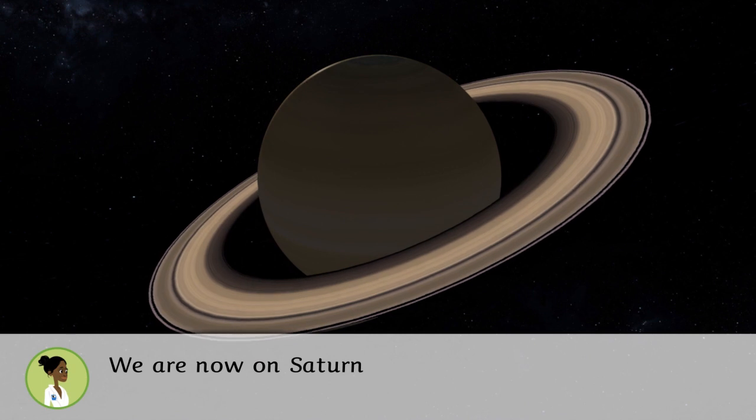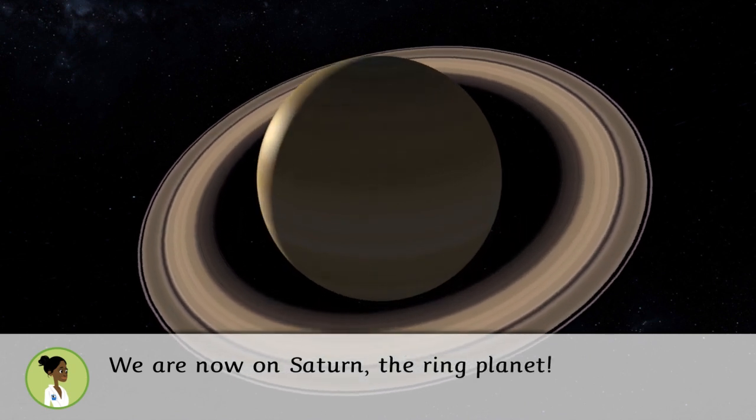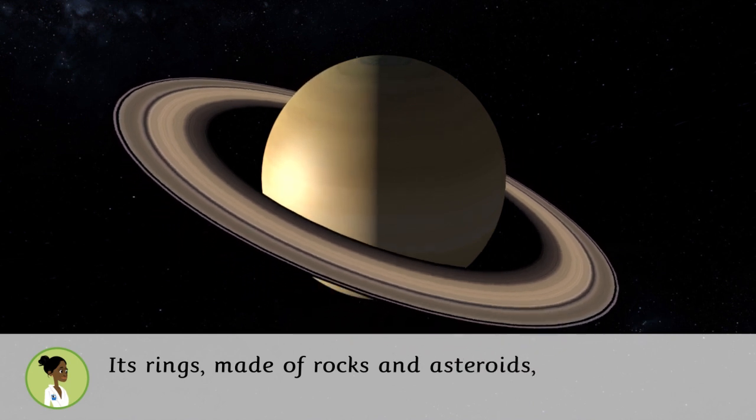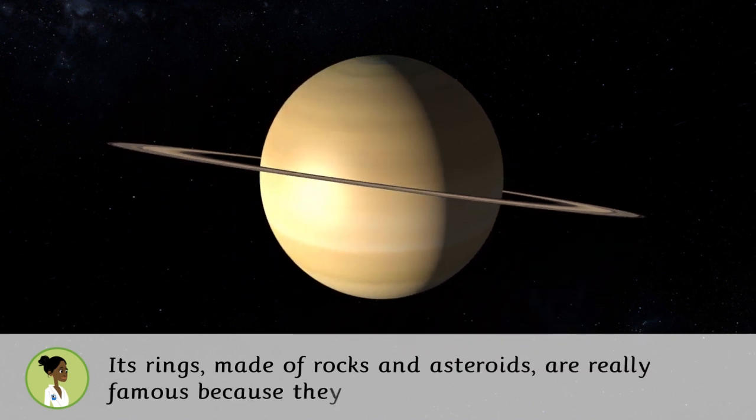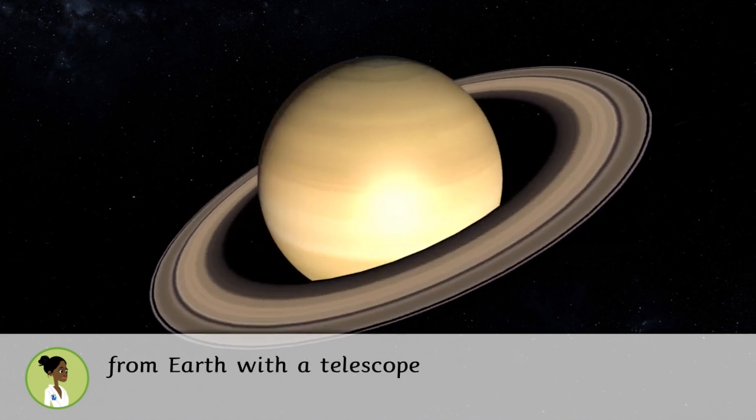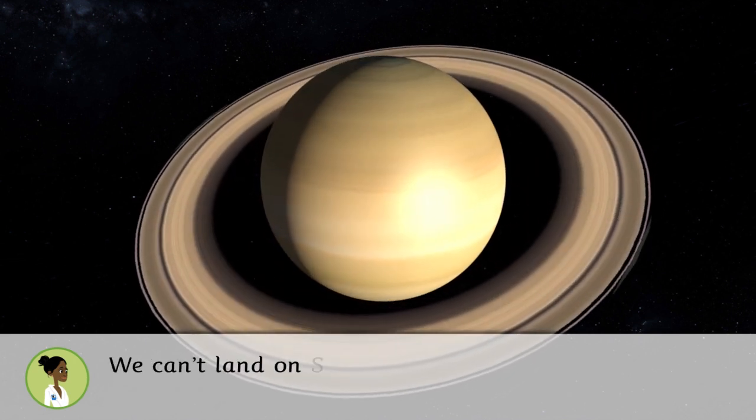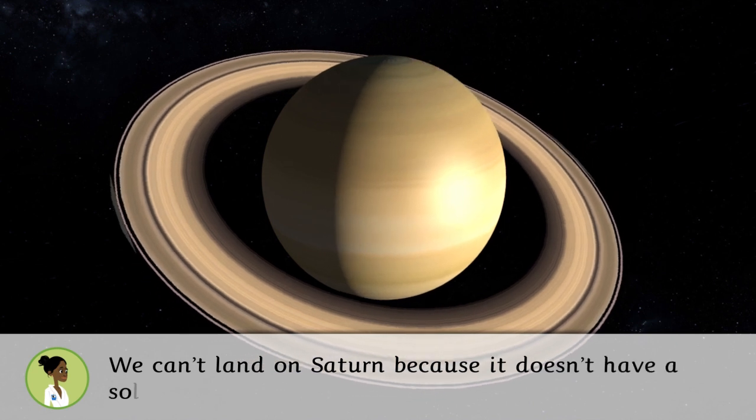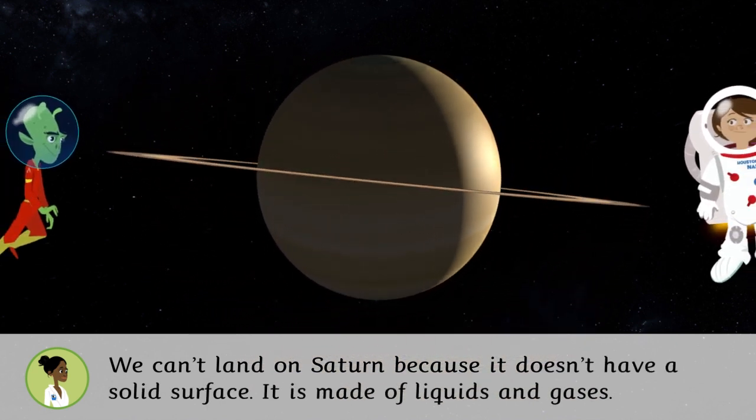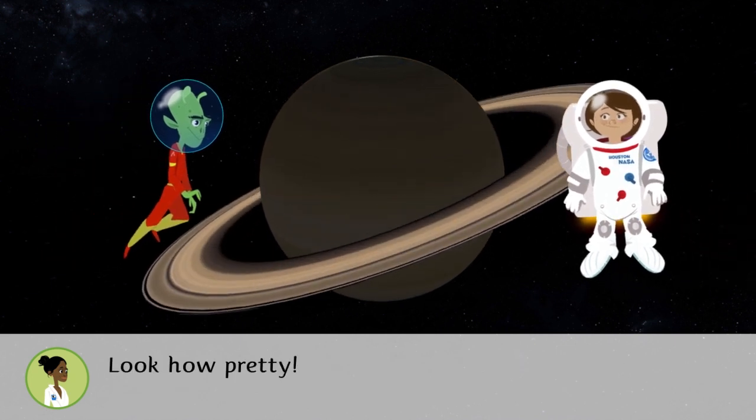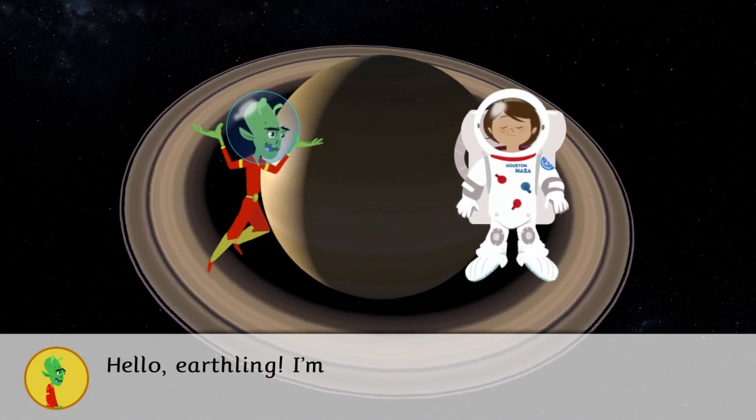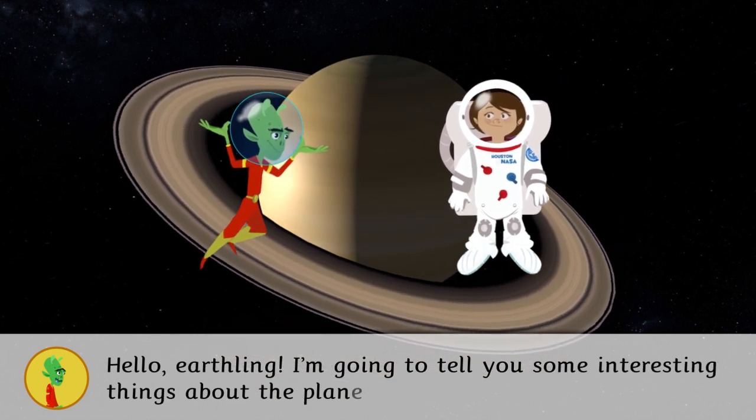We are now on Saturn, the ring planet. Its rings made of rocks and asteroids are really famous because they are the only ones you can see from Earth with a telescope. We can't land on Saturn because it doesn't have a solid surface. It is made of liquids and gases. Look how pretty. Hello Earthling. I am going to tell you some interesting things about the planet.